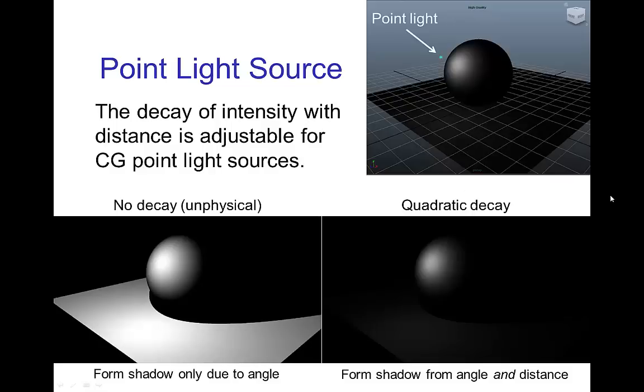Here we see some examples from Maya where we set up a point light from a sphere. In the rendered image on the left, this is when we have no decay of the intensity with distance, so the form shadow is entirely due to angle. On the right, we have a more realistic point light source, like as if it was from say a candle. And then the form shadow is both from angle and distance, so you see very different type of illumination in these two cases.